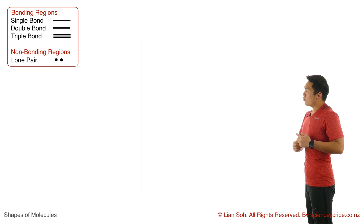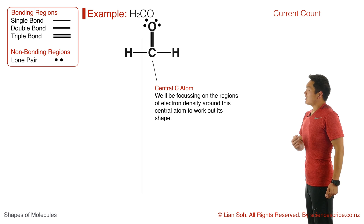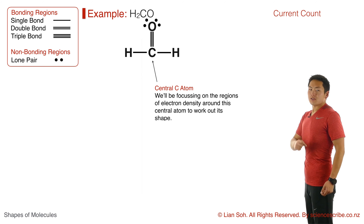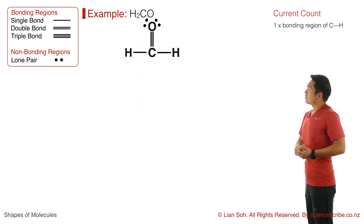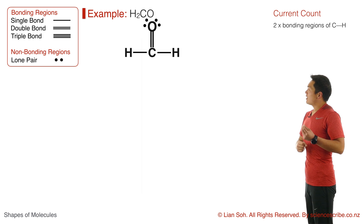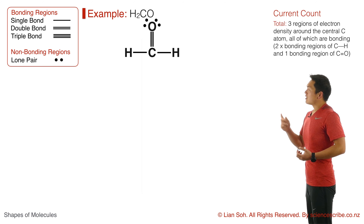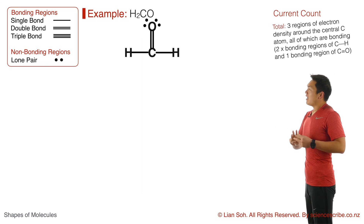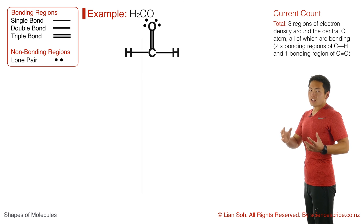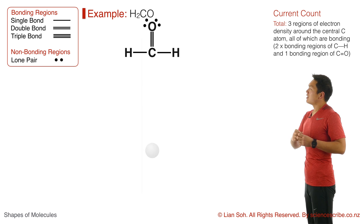Looking at another example — H2CO. Same as before, I need a Lewis diagram. I can see there is a single bond to an H from the central atom: single bond, one region. There's another single bond going to an H: single bond, one region. And from the carbon atom there's also a double bond to an oxygen: double bond, also counts as one region. This means around this central carbon atom there are three regions of electron density, and just like before they need to be arranged to give maximum separation and minimize repulsion.